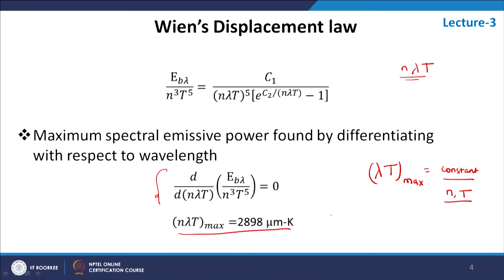What Wien's displacement law basically says is that when you increase the temperature, the maximum intensity appears at a shorter wavelength region. So if you have a sun which is at 5777 Kelvin, the maximum intensity of solar radiation is in the visible range, and that is why our eyes are much more sensitive to visible radiation. If you look at radiation coming from a star at very high temperature, the radiation intensity will be shifted towards shorter wavelengths, peaking in gamma rays and other short wavelength spectrum.